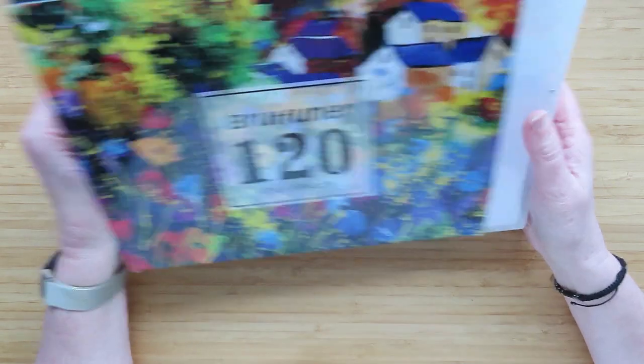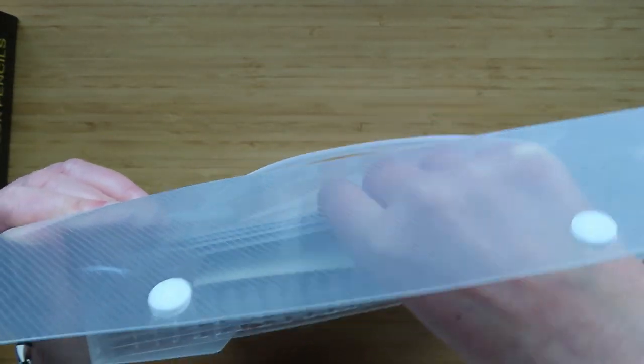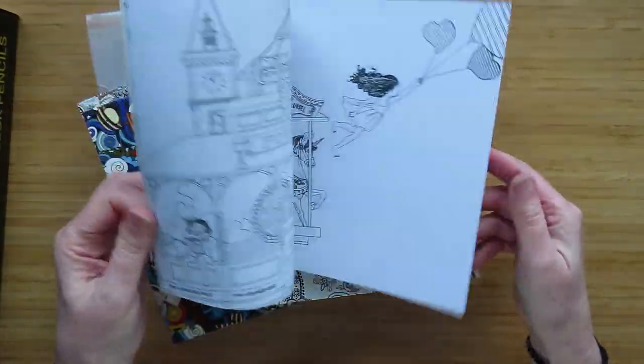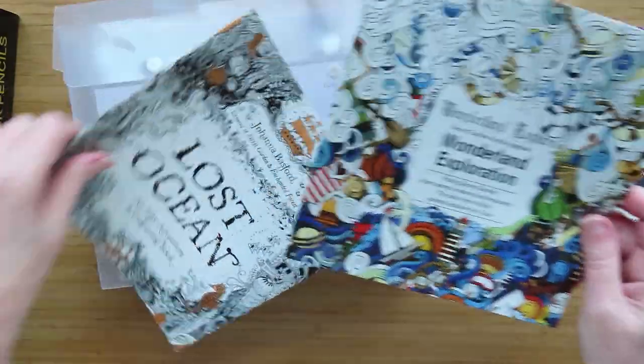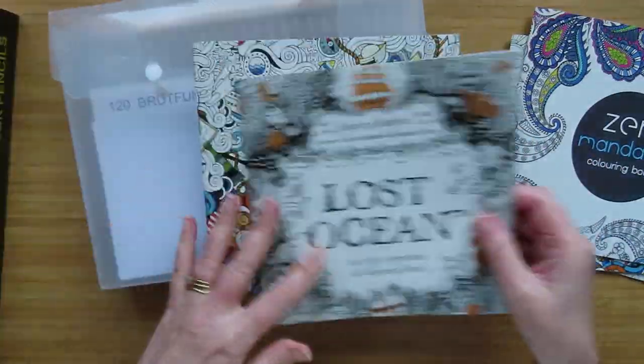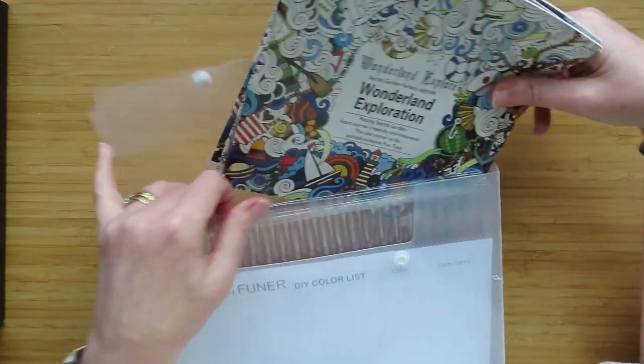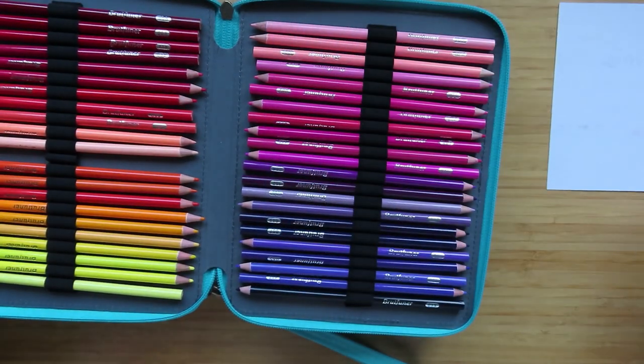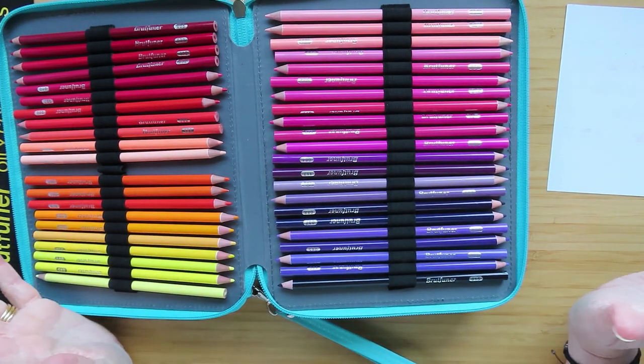So I bought them and they came in this box and they came with four cheapy coloring books. This one is a rip-off of a Dara Song book, and this is probably a rip-off of someone's book, and this is a rip-off of Joanna Bashford's book. It came with four coloring books. I wasn't expecting anything fantastic from them, but interestingly, when I started using them, and this is what they look like, I put them in a case. When I started using them, I really liked them.